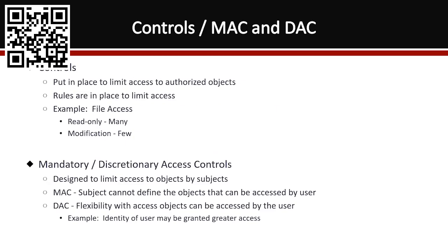Now we're dealing with controls — mandatory and discretionary access controls. A control puts limits on access to authorized objects, limiting what an object can and cannot do, protecting the overall system. An example would be file access: you may want everybody to have read-only but only a few to have modification rights. However, what often happens is most people are set for modifications and read-only is given to few — because people just set it up and forget about it.